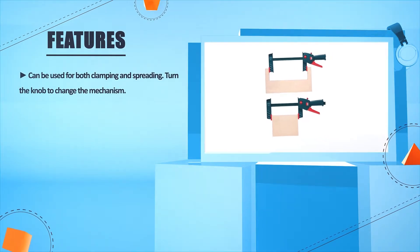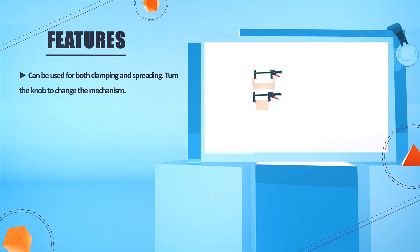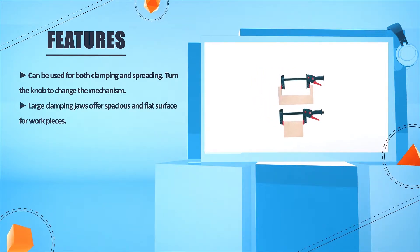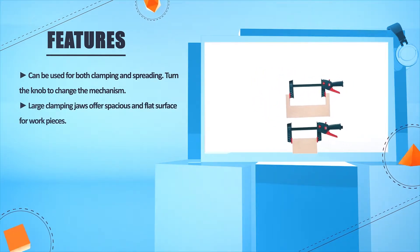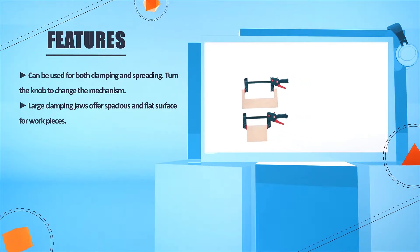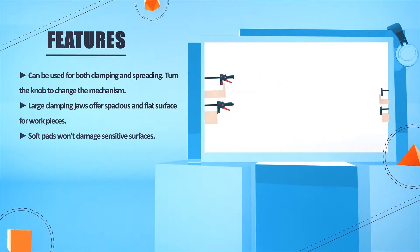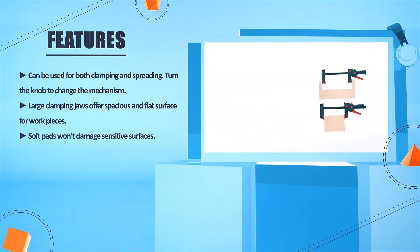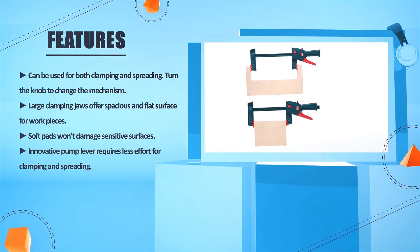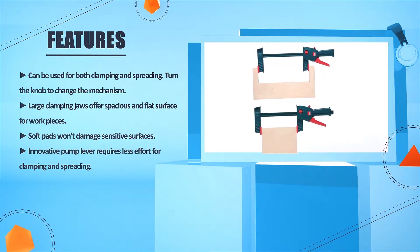Can be used for both clamping and spreading. Turn the knob to change the mechanism. Large clamping jaws offer spacious and flat surface for workpieces. Soft pads won't damage sensitive surfaces. Innovative pump lever requires less effort for clamping and spreading.